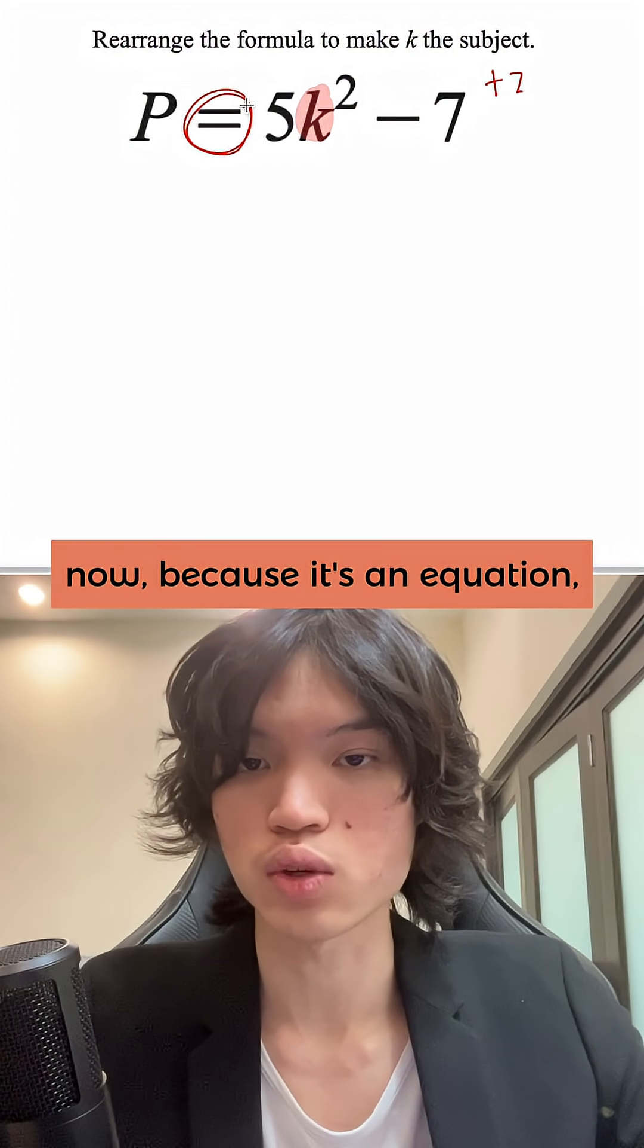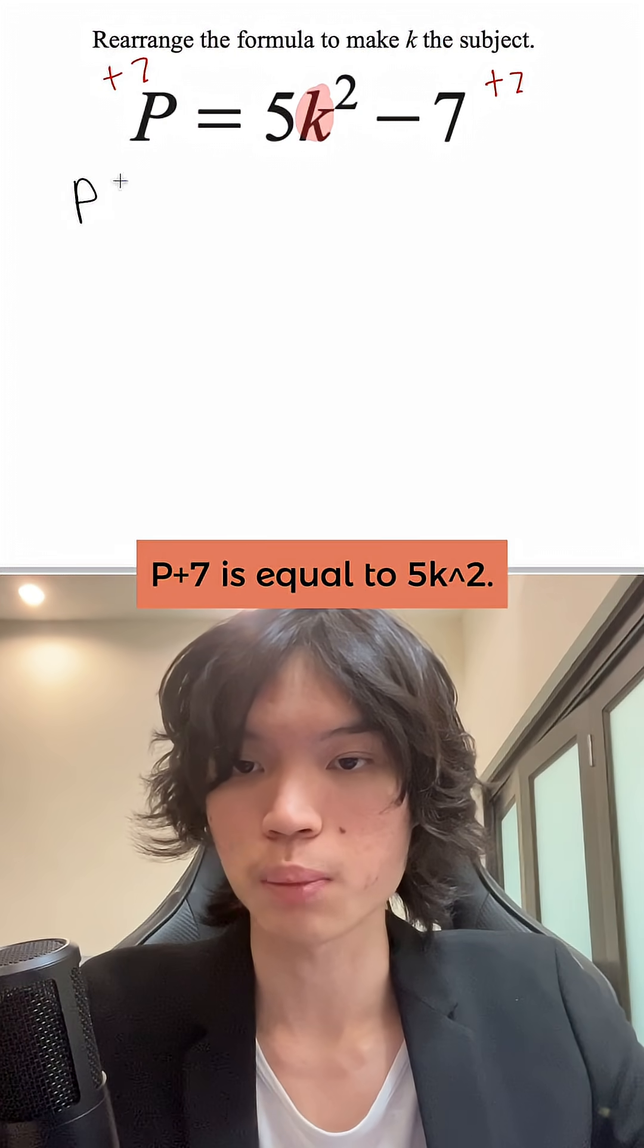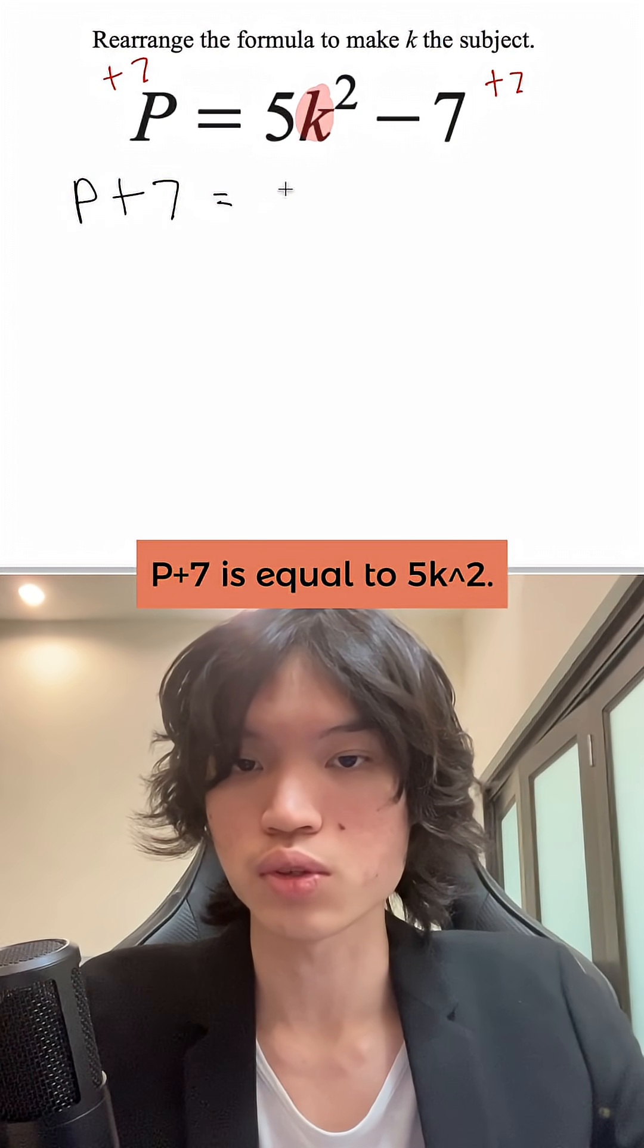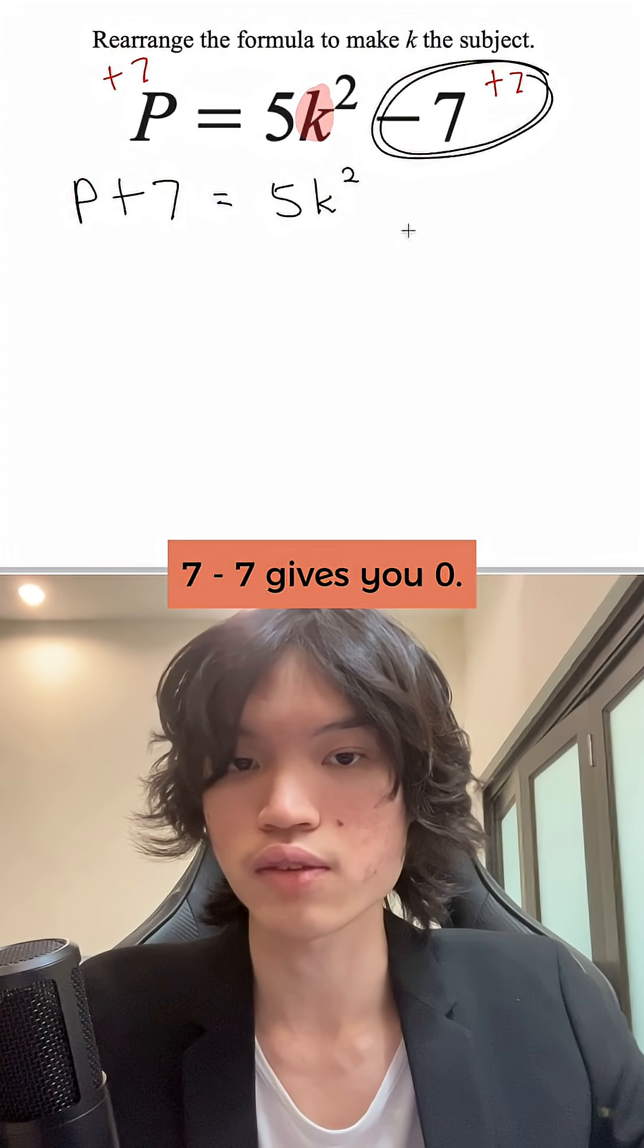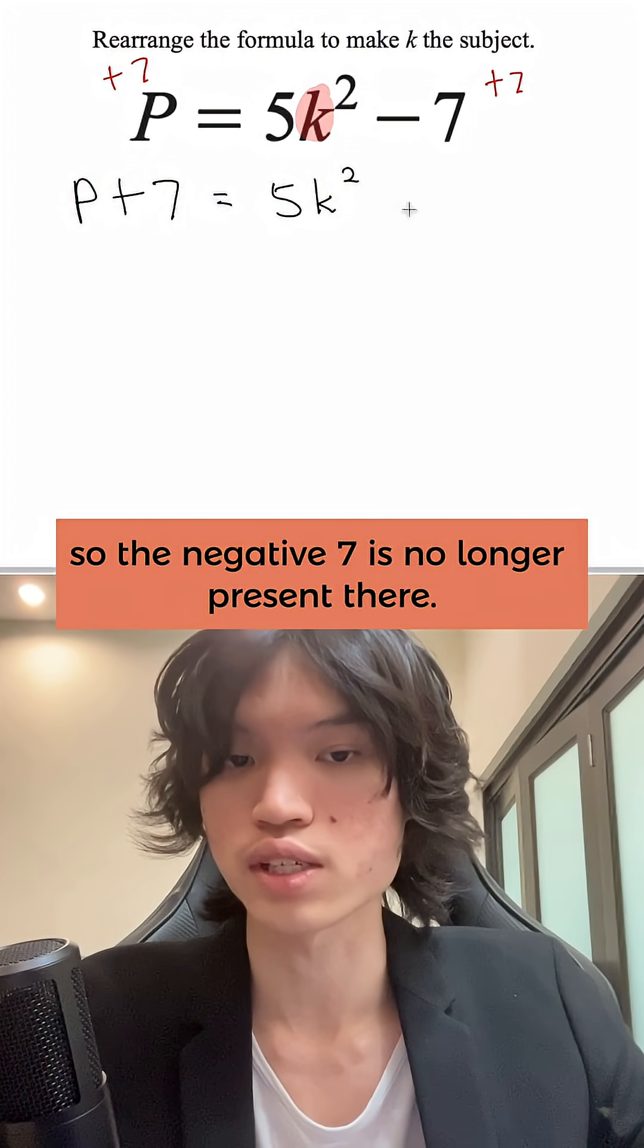Now because it's an equation, we have to plus 7 on both sides. Then we will get capital P plus 7 equals 5k squared. And because you added 7, 7 minus 7 gives you 0, so the negative 7 is no longer present there.